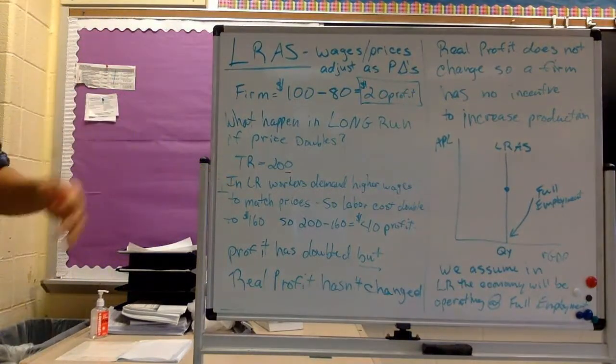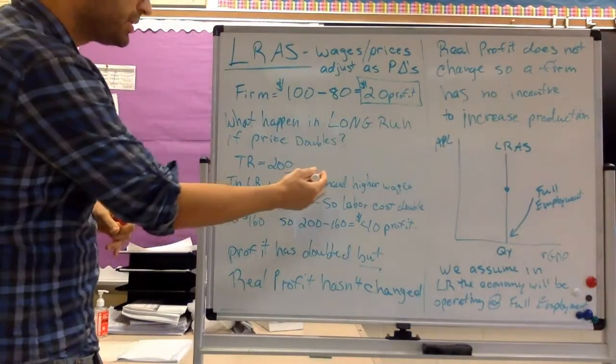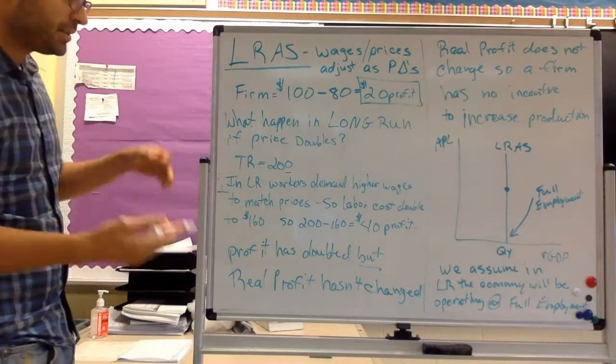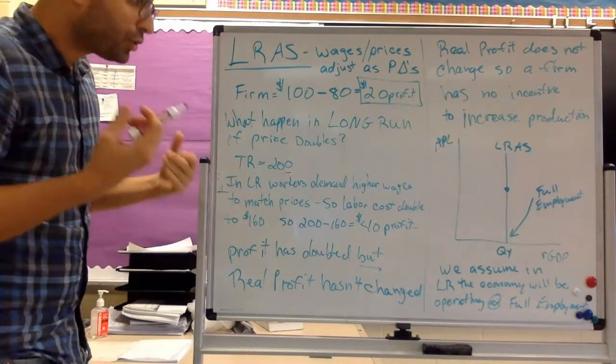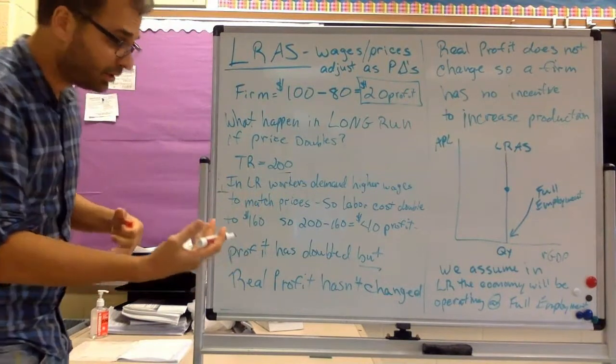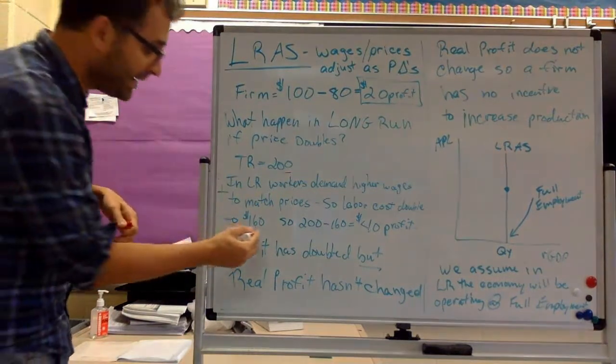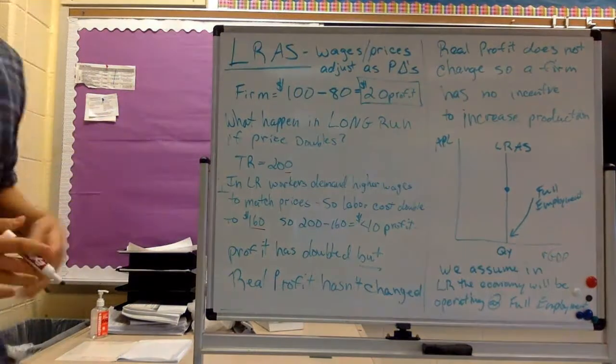So in the long run, why is that? The workers demand higher wages to match the price change. So labor costs also is going to double in the long run. Instead of it being $80, it's going to be $160. So what's the profit now? Total profit is $200 minus $160, which is $40 of profit.